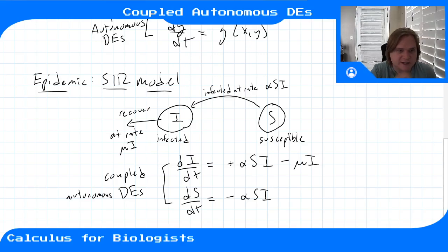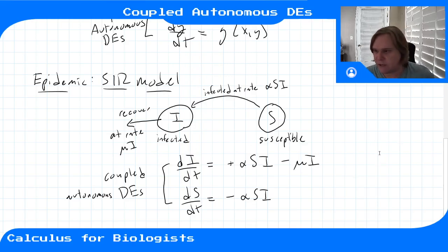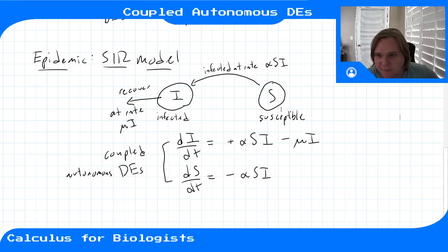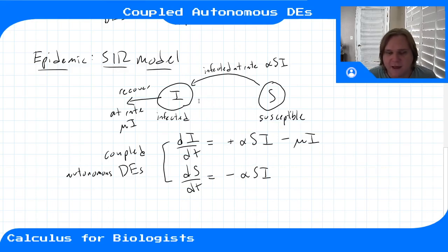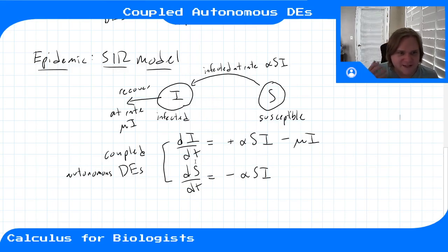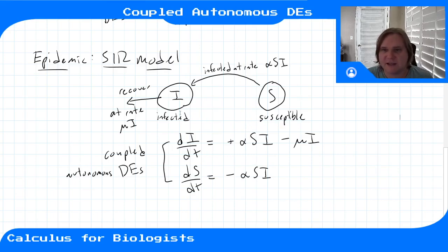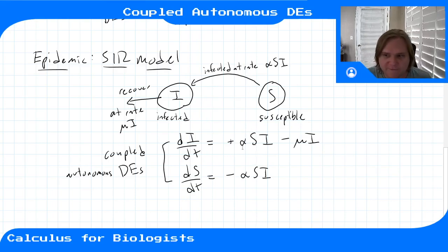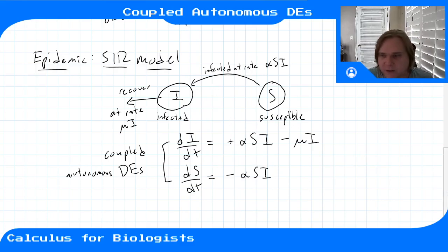We'll go into each of these examples in more detail once we've learned how to analyze these types of equations. I just want to give an overview of where these equations come from and the complex systems they can model. This simple SIR framework is the basis of a lot of epidemic modeling, extended with more sophisticated infection rates.